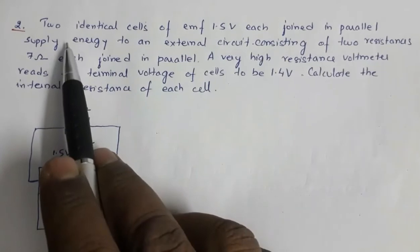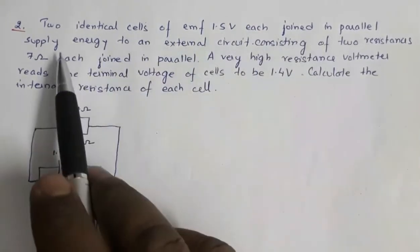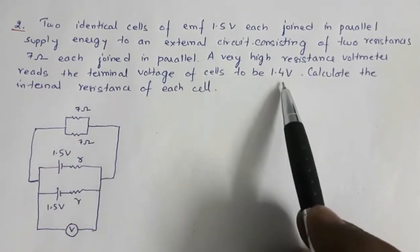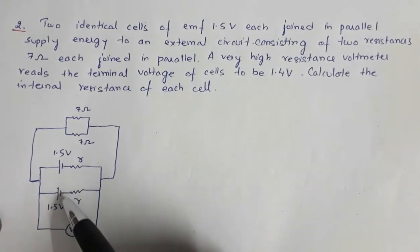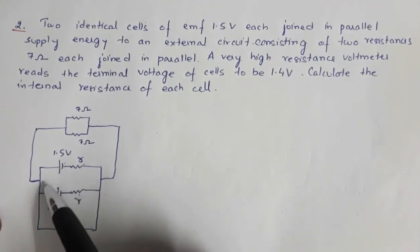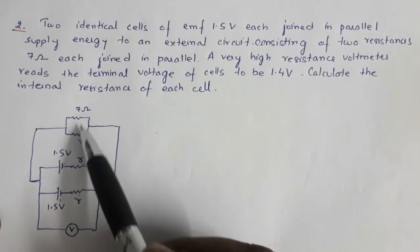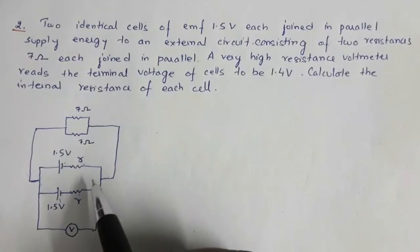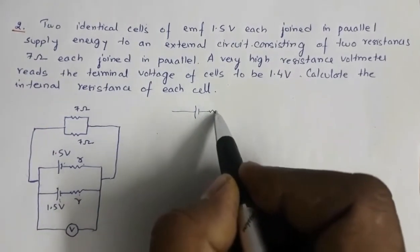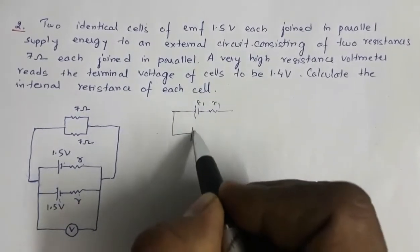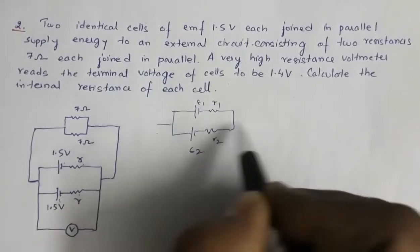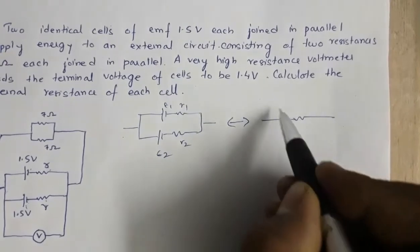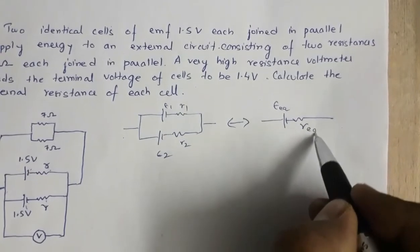Another 2016 numerical: two identical cells of EMF 1.5 volt each joined in parallel supply energy to an external circuit of two resistances of 7 ohm each joined in parallel. A voltmeter reads the terminal voltage as 1.4 volt. Calculate the internal resistance of each cell. Two cells in parallel with same internal resistance r can be represented as a single cell of equivalent EMF and equivalent internal resistance r/2.